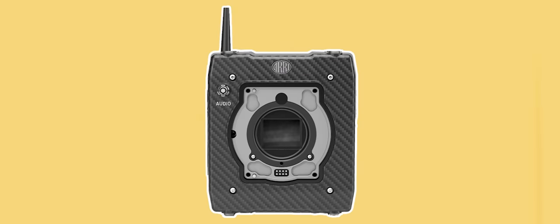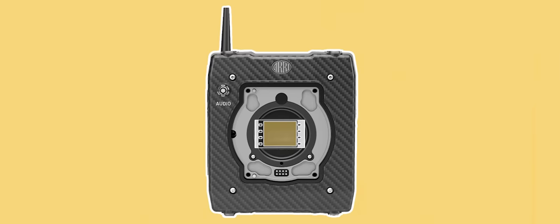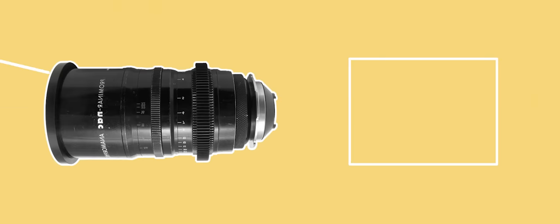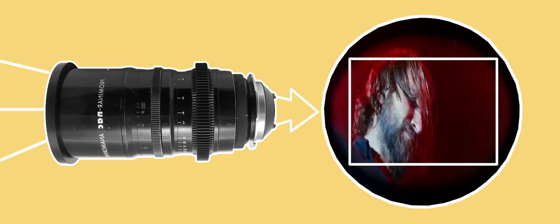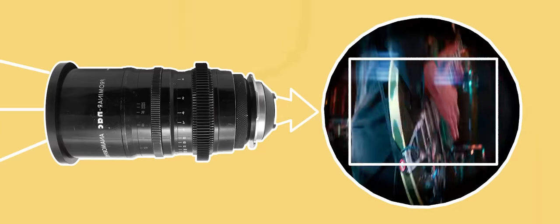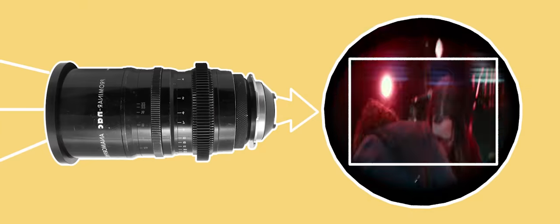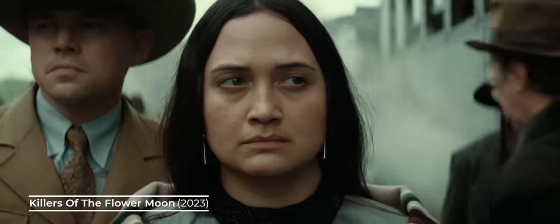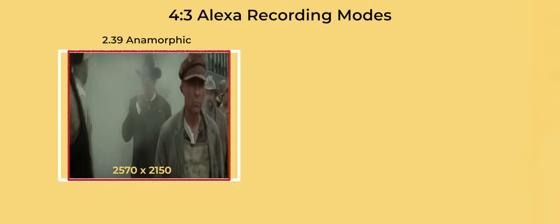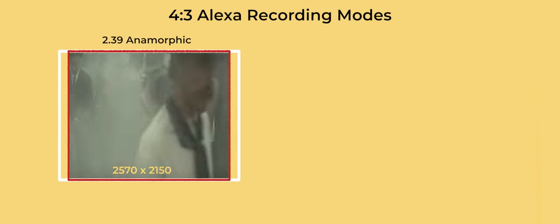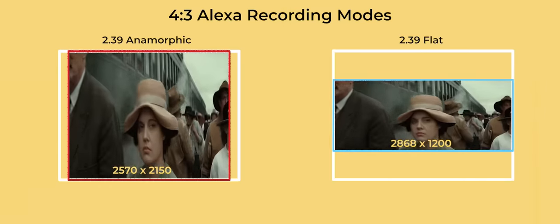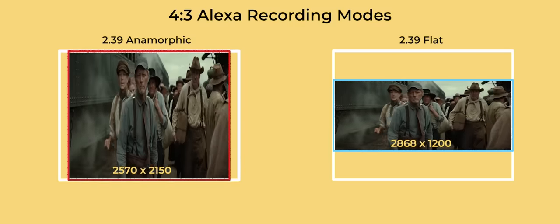Many digital cinema cameras use a sensor that approximately models the size of a Super 35 negative with a 4:3 ratio. This meant that most existing anamorphic lenses, which were designed for 4-perf film, would be able to cover the width of digital sensors without vignetting. Like on film, these 2x anamorphic lenses could cover the full height and most of the width of the sensor, filling a greater overall surface area than shooting a cropped Super 35 image with spherical lenses.